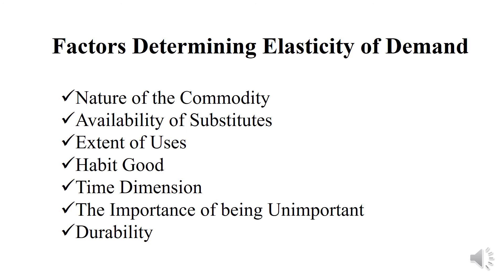The seventh factor is durability. Durable commodities have elastic demand. If the price of these goods rises, people will spend less on them. On the other hand, following a fall in the price of durable commodities, people demand more of them. In the case of non-durable commodities, demand is also elastic.